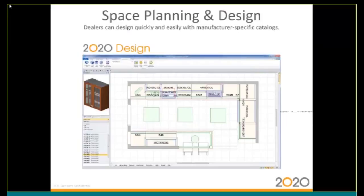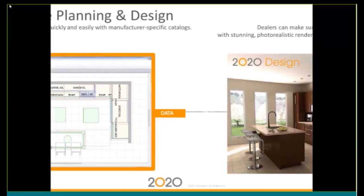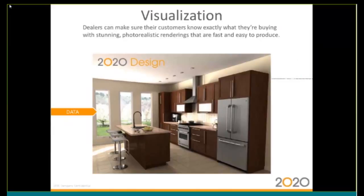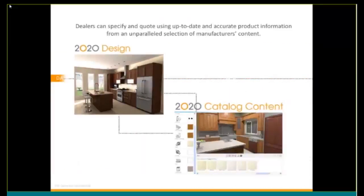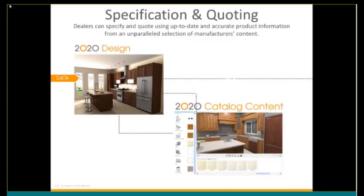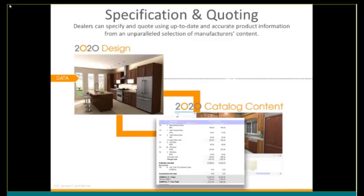2020 Design provides space planning and design. Dealers can design quickly and easily with manufacturer-specific catalogs. 2020 Design also provides the ability for visualization. Dealers can make sure their customers know exactly what they're buying with stunning photorealistic renderings that are fast and easy to produce. The combination of 2020 catalog content and 2020 Design allows dealers to specify and quote using up-to-date and accurate product information from an unparalleled selection of manufacturer's content.